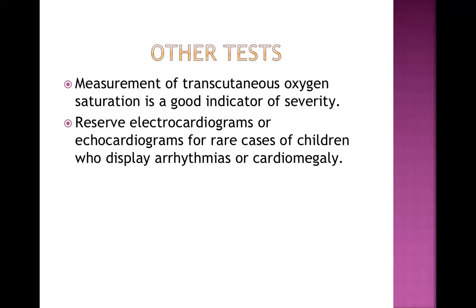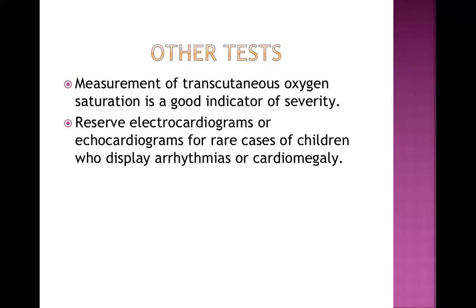Additionally, measure oxygen saturation by pulse oximetry — now included as the fifth vital sign. Transcutaneous oxygen saturation above 95% in room air is normal; above 90% the baby is managing, but below that there is a problem. Arrange an ECG or echocardiogram if heart disease is suspected — for example, if there is arrhythmia or cardiomegaly on X-ray.